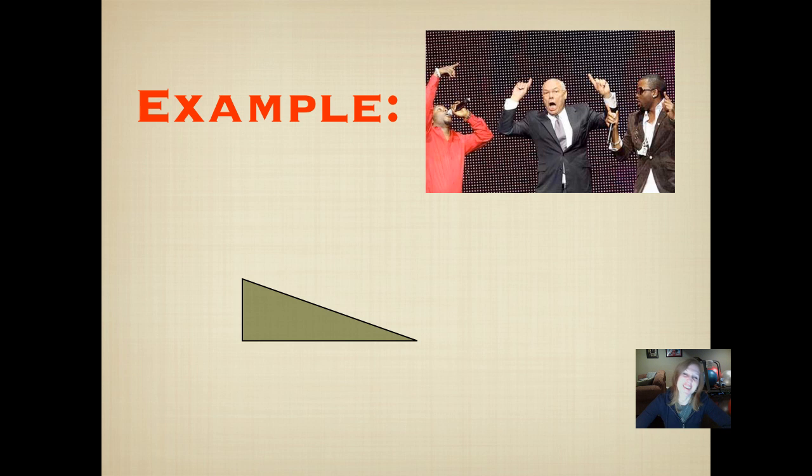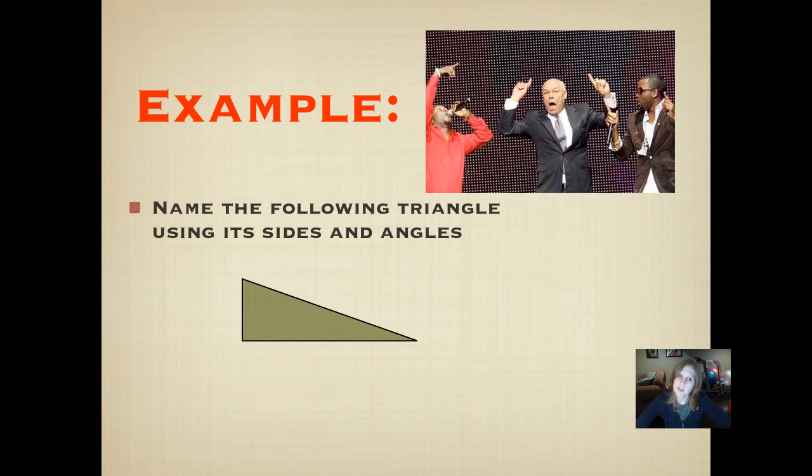Here's our first example. That's actually Colin Powell. He's performing a rap with some famous, well-known rappers, and he is doing it to help fundraise for Africa. So you know that I really care about kids in Africa, so I appreciated that he did that. And it's also kind of fun for you to see a different side of Colin Powell. He usually looks pretty serious. Name the following triangle using its sides and its angles. Pause it and push play when you've written it down. You can go back and refer to your notes if you need to.